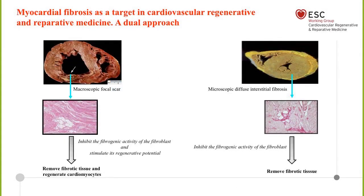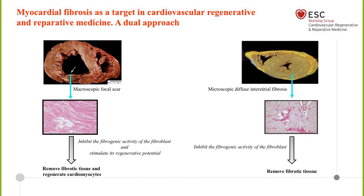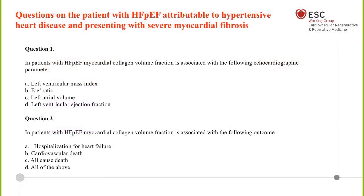What I would like to propose is that myocardial fibrosis can be a target in cardiovascular regenerative medicine, but we need to approach this target with a dual approach. It is not the same to act on the macroscopic focal scar in the infarcted heart — where inhibiting fibrogenic activity and stimulating the fibroblast's regenerative potential is the goal — versus the non-infarcted heart with pressure overload, where we need to target microscopic diffuse interstitial fibrosis by inhibiting fibrogenic activity and modulating the fibroblast phenotype to reduce accumulation of fibrotic tissue.